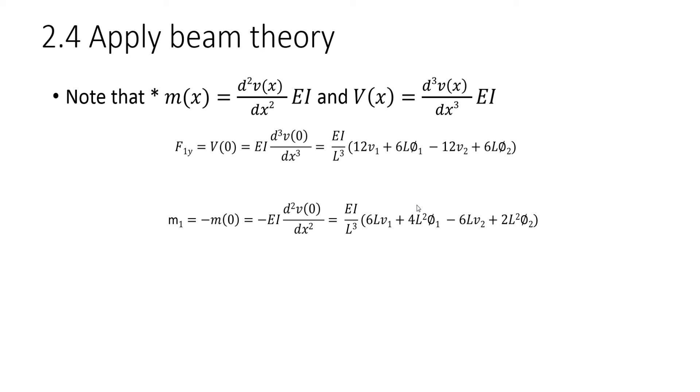Next, subsequently, F2y equals minus the shear force or the vertical force function at length of the beam. The negative is carried over and you get that expression. Also this negative comes from the same principle due to the difference in direction and the sign conventions. And lastly, the moment at the end of the beam or the moment at node 2 is equal to the moment at length of the beam, which gives you that expression.